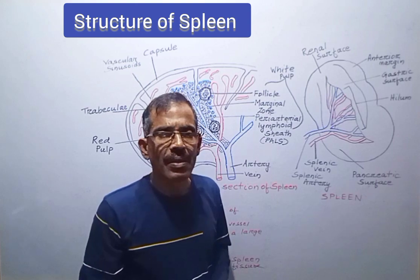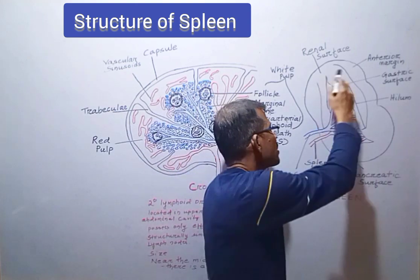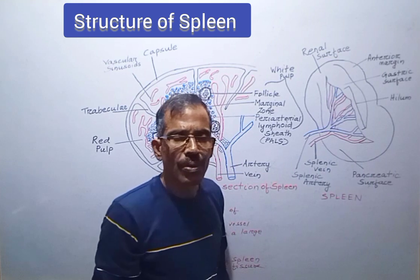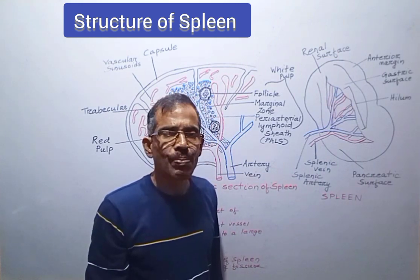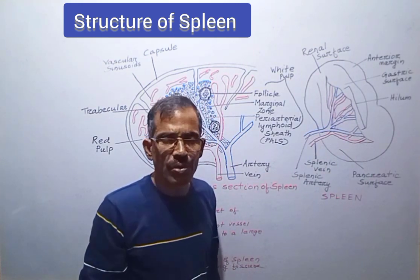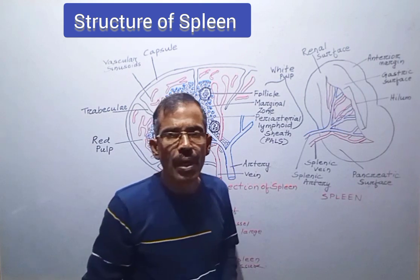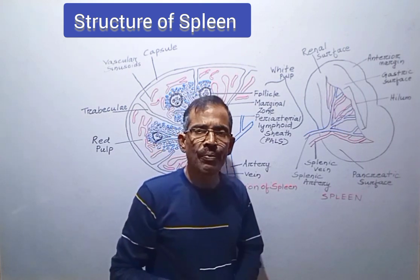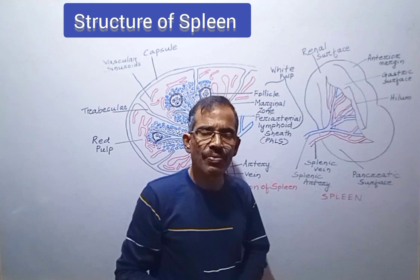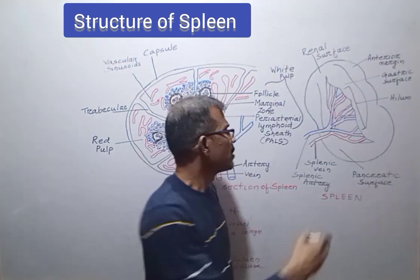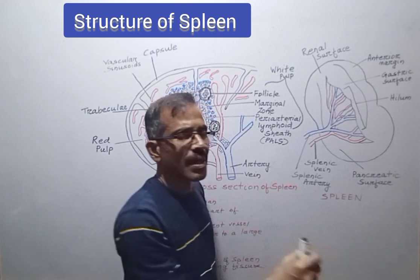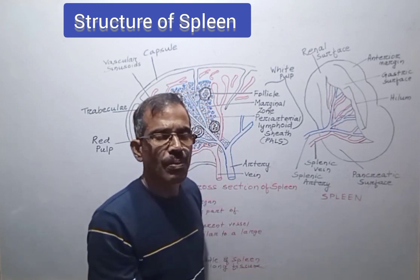In adults, the spleen is about the size of an avocado. Structurally, spleen is similar to large lymph nodes. Lymph nodes filter lymph whereas spleen stores as well as filters blood. This figure shows various surfaces and margins of spleen.